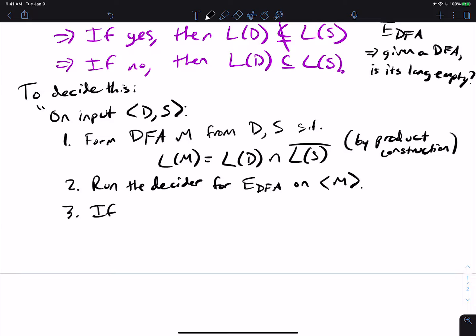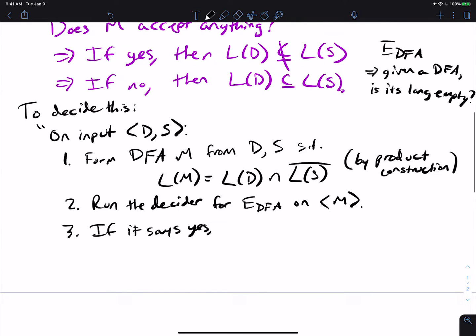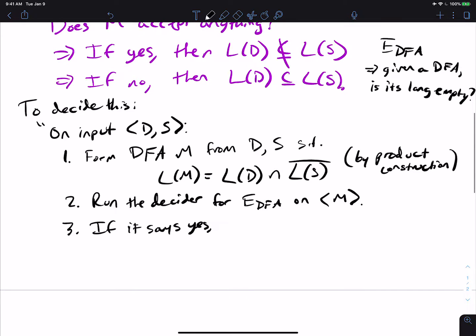So if it says yes, then that means that L of M is empty, which means that there is no string such that D accepts it and S doesn't, which means we should say accept. Because that means if the language is empty, there's no string that D accepts that S doesn't. And then otherwise, we should reject at that point.